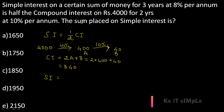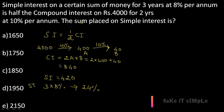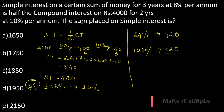Simple interest is half of compound interest, so half of 840 is 420. In simple interest, the interest remains the same every year. Here the rate is 8% per annum for 3 years, so 3 × 8% = 24%. This 24% equals 420. So to find 100% (the principal): 420 ÷ 24 × 100.